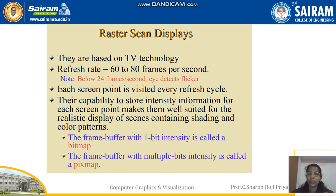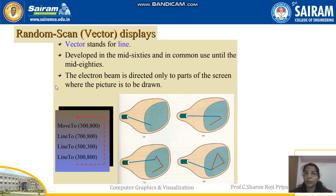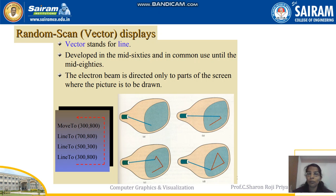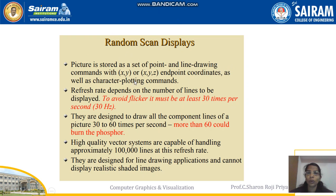A video monitor can be a random scan display or a raster scan display. Random scan — also called vector display — means every picture is drawn with the help of lines; it is a line drawing system. Unlike raster scan where the beam sweeps top to bottom, in random scan the electron beam directly focuses on the position where the image needs to be displayed. To avoid flickers, it must be refreshed at least 30 times per second, and this refresh rate depends on the number of lines to be displayed.